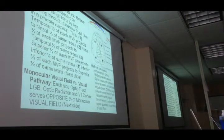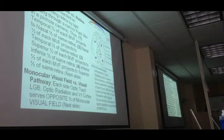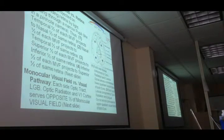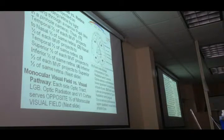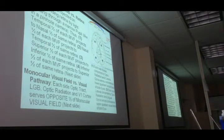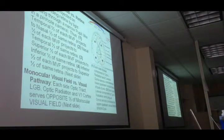The same principle continues from the optic tract through the LGB: each LGB serves the opposite half of the visual fields of both eyes. From the LGB we have the optic radiation. If we consider the optic radiation as a whole bundle, each optic radiation serves the opposite half of the visual field of both eyes. The left optic radiation, receiving fibers from the left half of both retinas, serves the right half of the visual fields of both eyes.